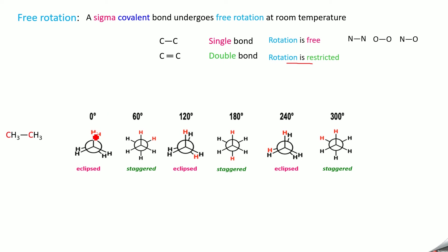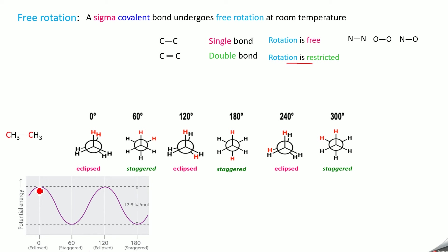At 0 degrees, these two hydrogens are very close to each other — all these things I discussed in the earlier video. The electrons of this hydrogen repel the electrons of this hydrogen, and that is what we call electronic strain or torsional strain. Also, the Van der Waals radii of this hydrogen and this hydrogen intersect, causing Van der Waals strain. Due to these strains, the molecule has high discomfort and high potential energy at 0 degrees. This form is called the eclipsed form.